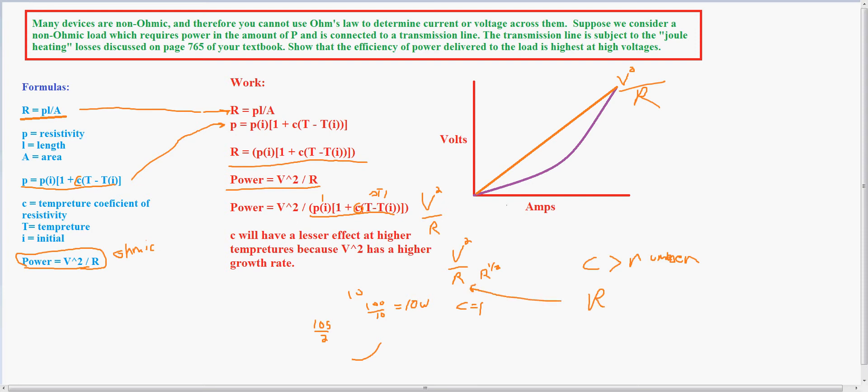But as the volts are higher, as volts become in the tens of thousands, C will have a lesser effect because it will have a lesser growth rate than V squared, because C will not be a value, C will be a constant.